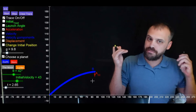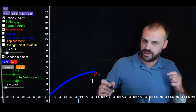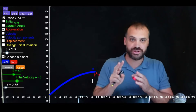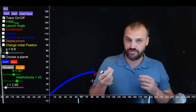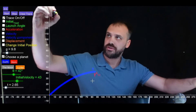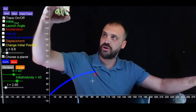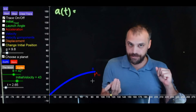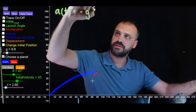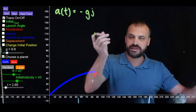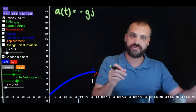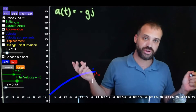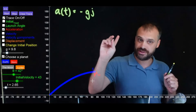It feels complicated, but it is remarkably straightforward. Remember, our object's acceleration never changes — its acceleration is just gravity. So we can say the acceleration with respect to time equals negative g j, a constant negative 9.8 meters per second squared in the j direction. That is our acceleration function.